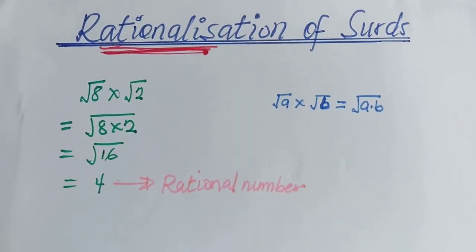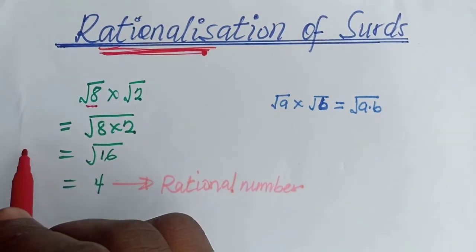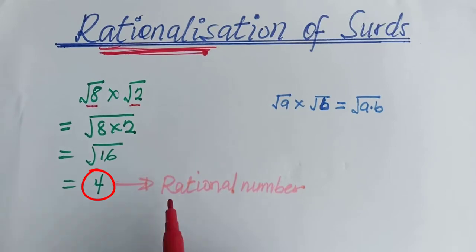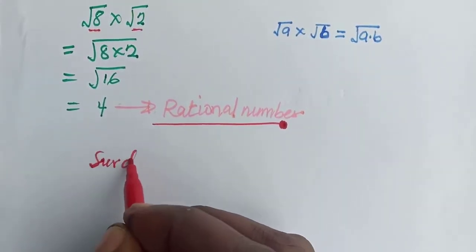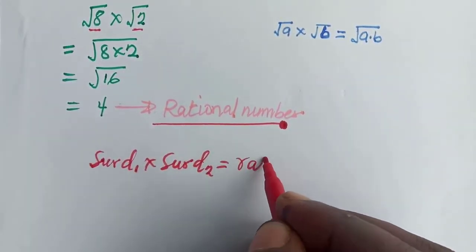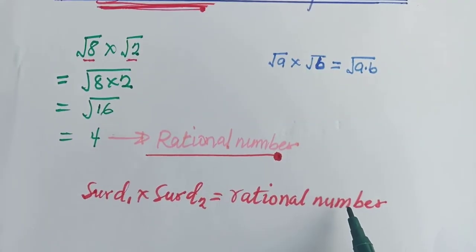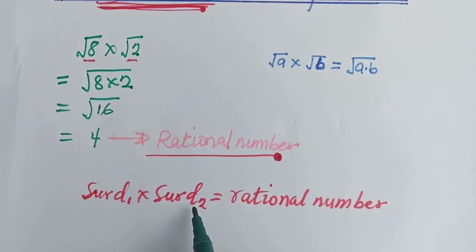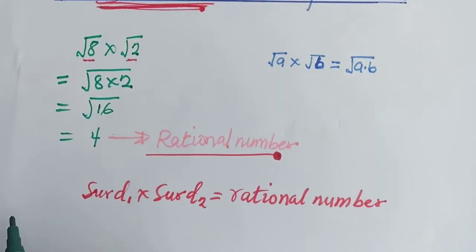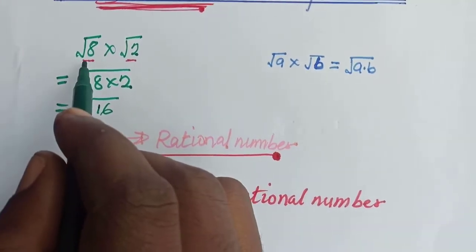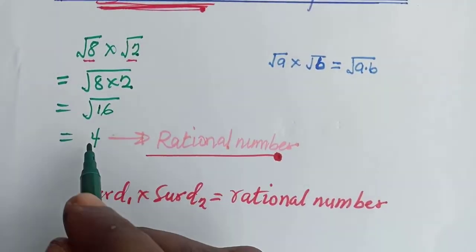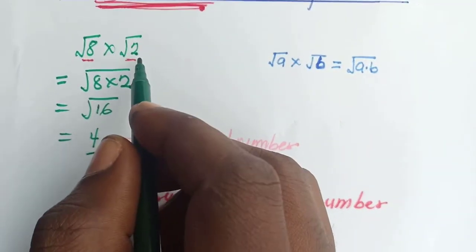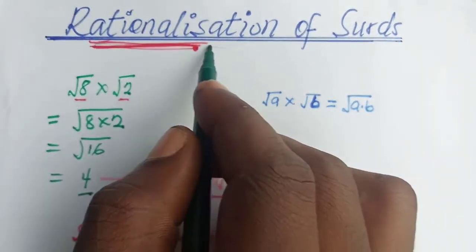What did we just do? We had a surd with 8 and multiplied it with another surd with 2 to get a rational number. So we can say surd 1 multiplied by surd 2 gives us a rational number. This process, in which root 8 — which is a surd — was converted into a rational number by multiplying it with another surd, root 2, is what we call rationalization.